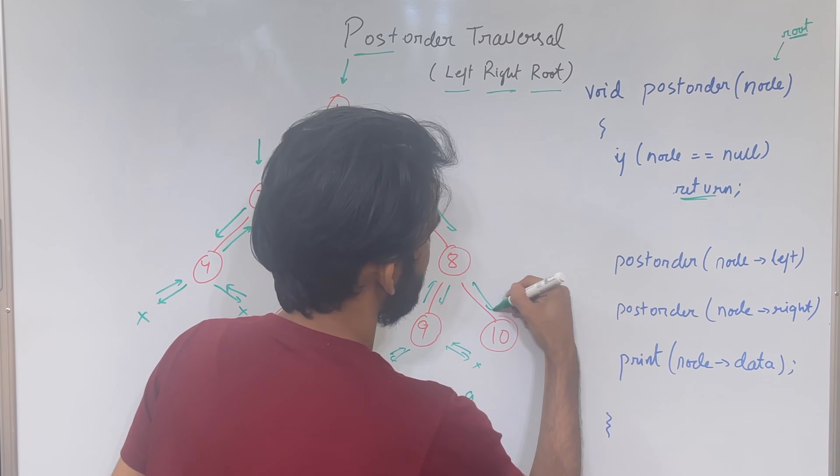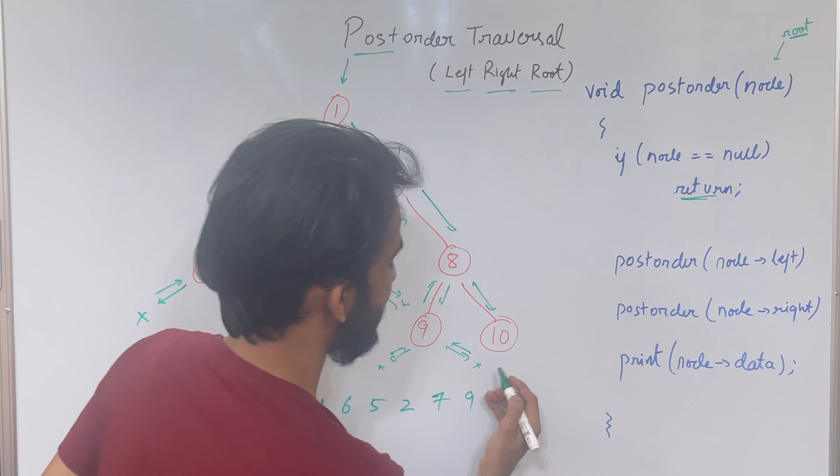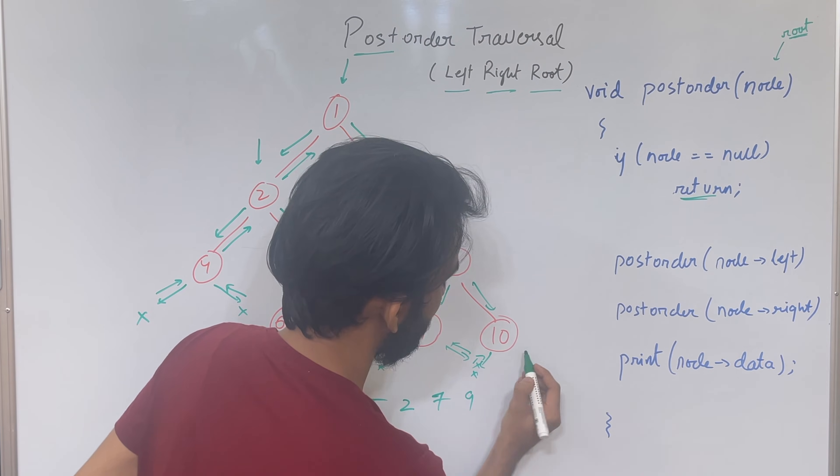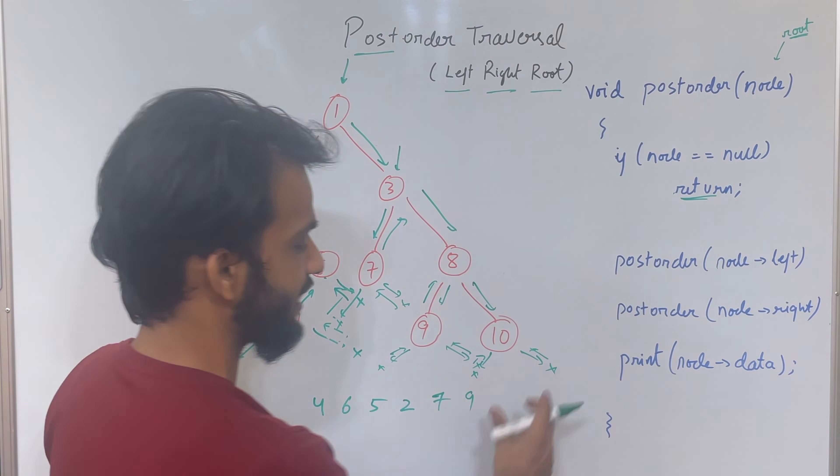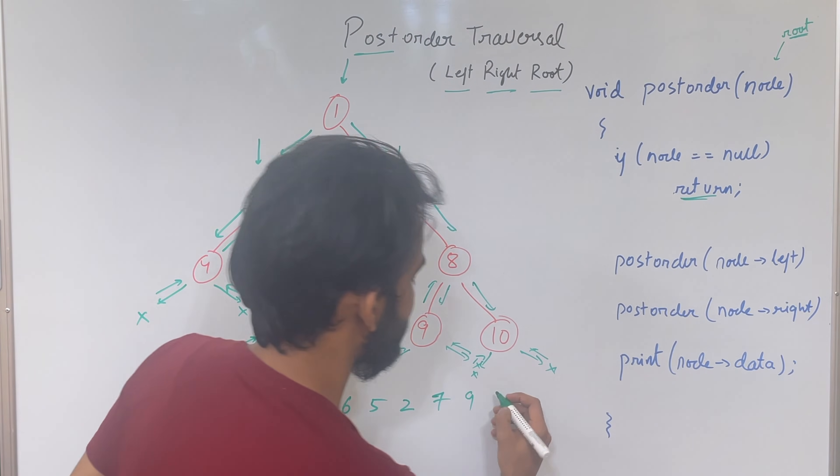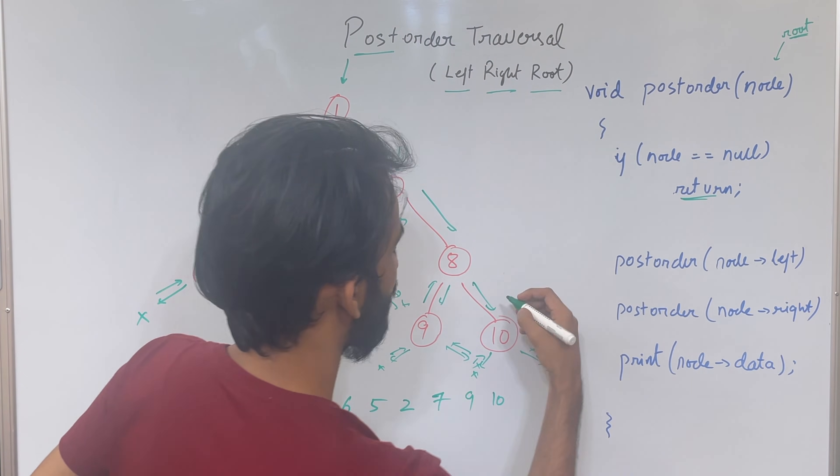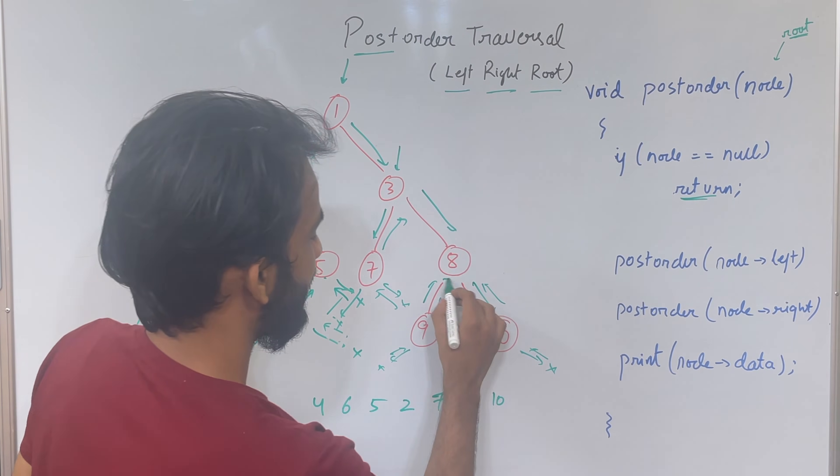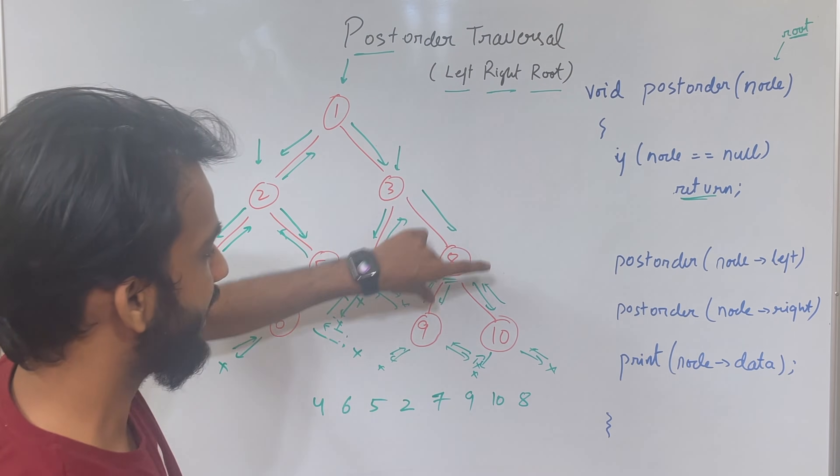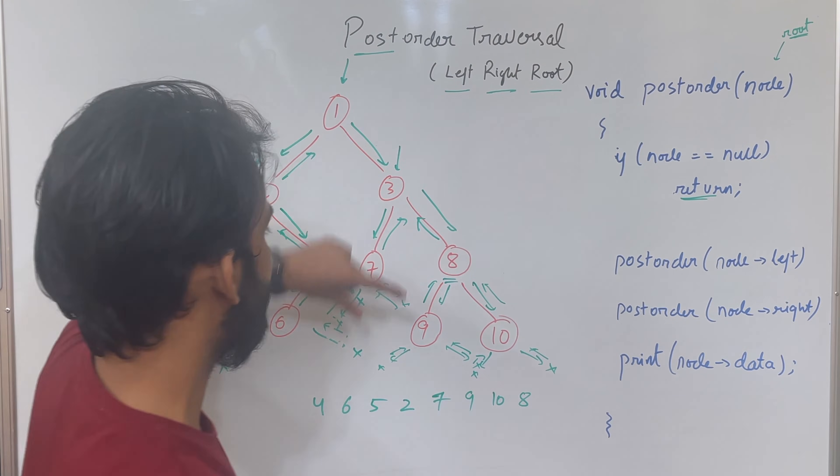8 says I've done my left, time to do my right. So go to 10. 10 says time to do my left, no one. 10 says time to do my right, no one, goes back. So 10 has done its left, has done its right, so it's over. Time to print it. Once I printed, 10 is over, go back. 8 says I've done my left, I've done my right, now time to print myself. Print it, 8 will go back.